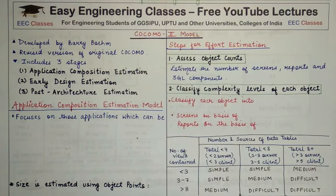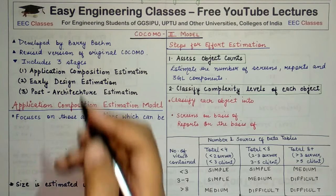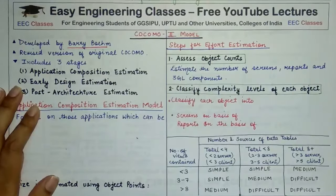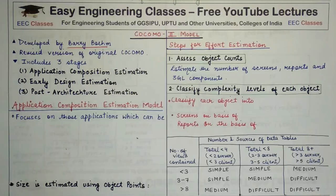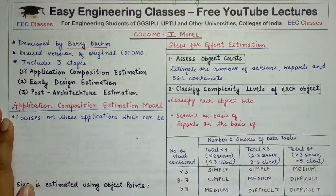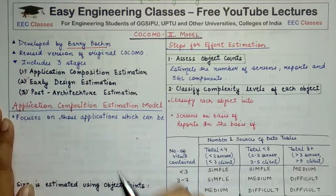Hey guys, welcome to Easy Engineering Classes. We are continuing with software engineering lectures and from today we'll start with COCOMO 2 model, which is a cost estimation model and the extended version of the basic COCOMO model. COCOMO 2 model was also developed by Barry Boehm and it is a revised version of the original COCOMO model. Just like in the original COCOMO model we had three different models, similarly COCOMO 2 model also has three different stages: first is Application Composition Estimation Model, second is Early Design Model, and third is Post Architectural Model.